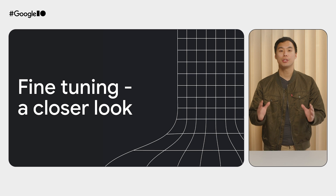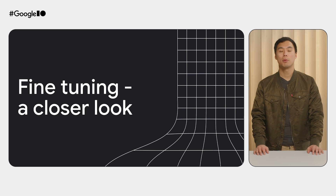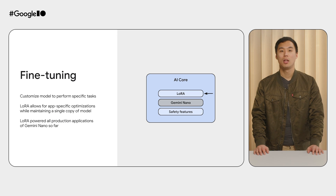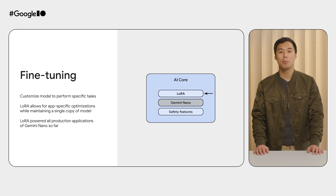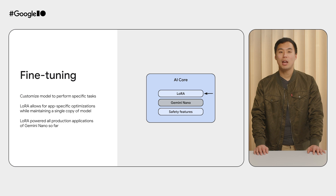As Miao alluded to earlier, fine-tuning allows an app or service to customize a model's weights to perform specific tasks. LoRA is a parameter-efficient technique used in fine-tuning that doesn't require changing base model weights. LoRA enables us to optimize Gemini Nano for different use cases and applications while maintaining a single copy of the model on-device to serve all apps that use it. All apps that have integrated Gemini Nano in production have leveraged LoRA to improve performance.